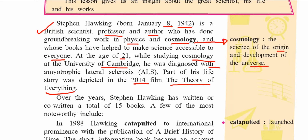The key points: Hawking was a British scientist who did groundbreaking work — meaning finding out new things. He made science accessible even to common people. At the age of 21 he was diagnosed with amyotrophic lateral sclerosis. There is also a film called The Theory of Everything that depicts his life, which you should know about.